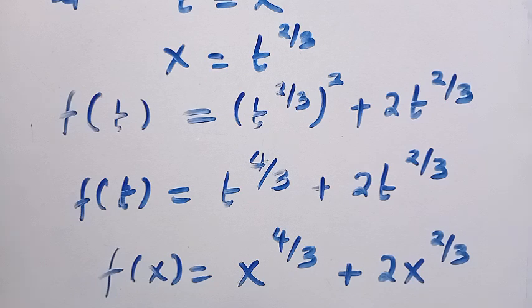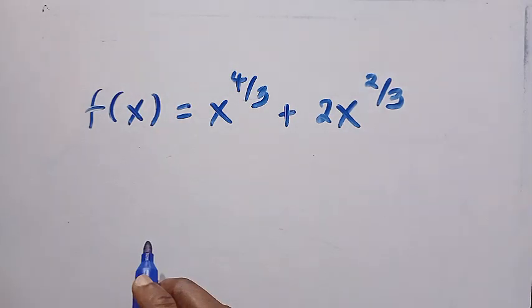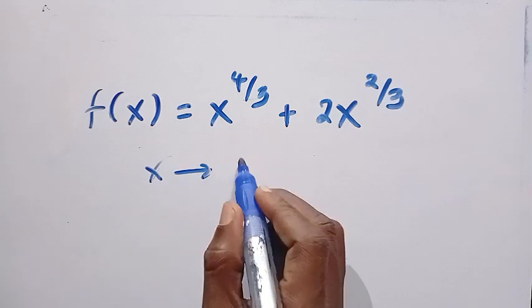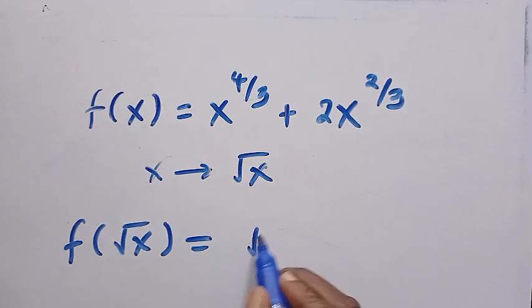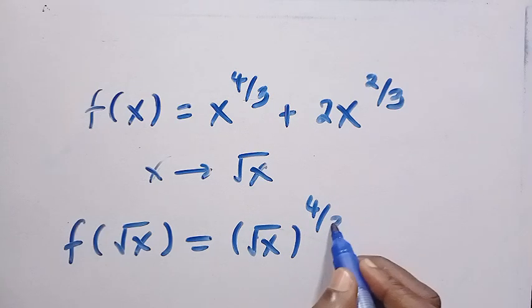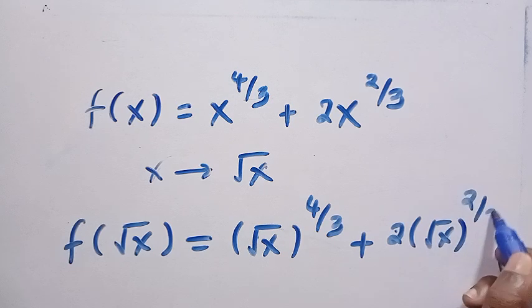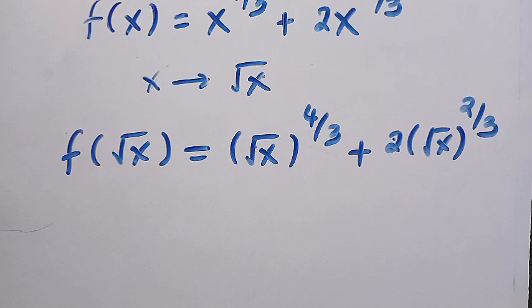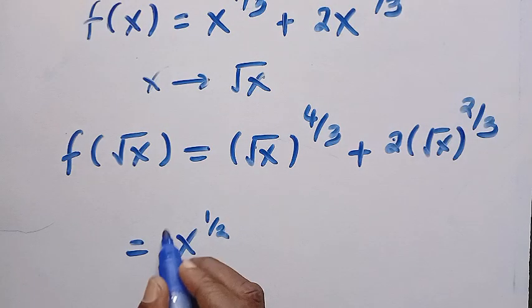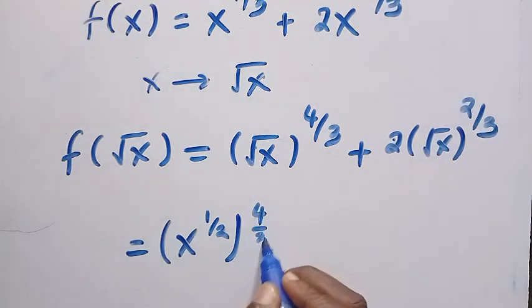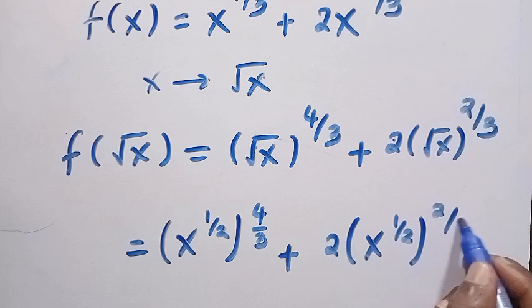Now let's see how we can get f of root x. This is f of x, and we need f of root x. By switching x to root x, we have f of root x equals root x, all raised to the power of 4 over 3, plus 2 times root x, all raised to the power of 2 over 3. Root x is the same as x raised to the power of 1 over 2, so we rewrite it as x to the power of 1 over 2, all raised to the power of 4 over 3, plus 2 times x to the power of 1 over 2, all raised to the power of 2 over 3.